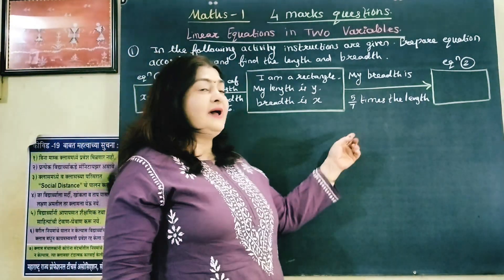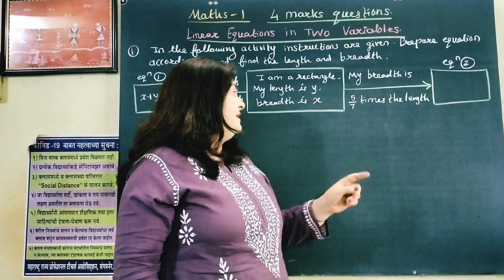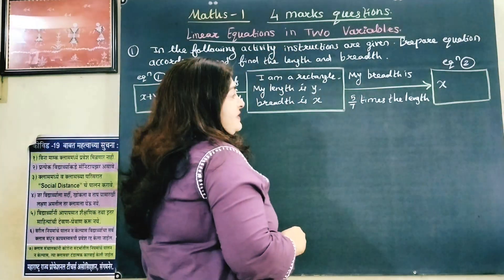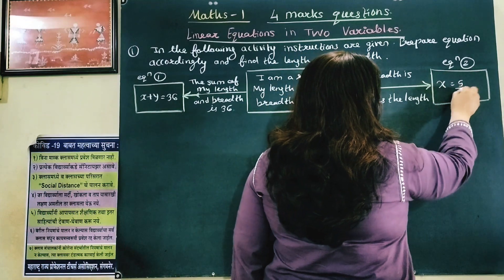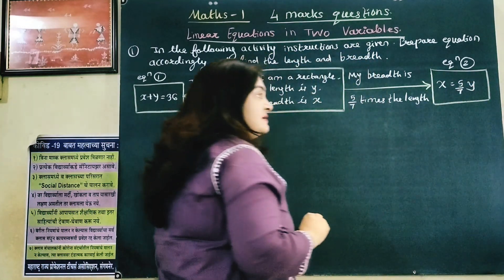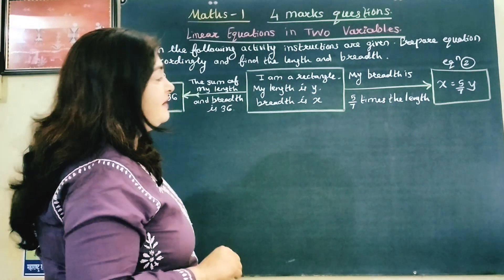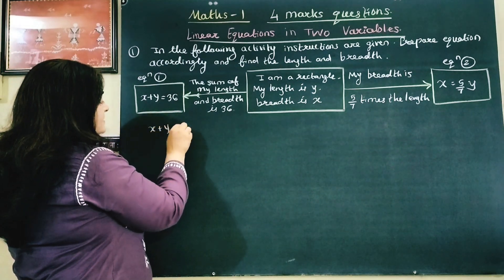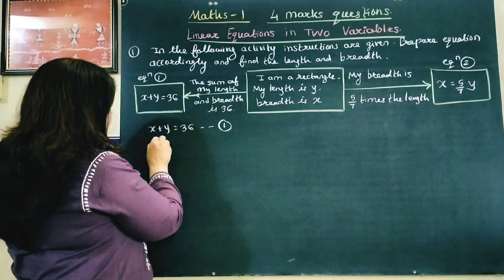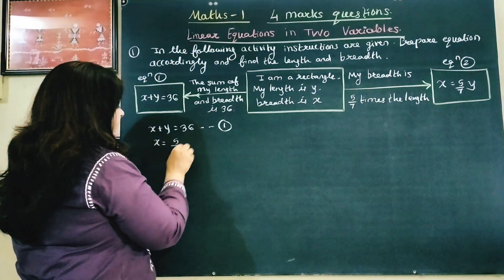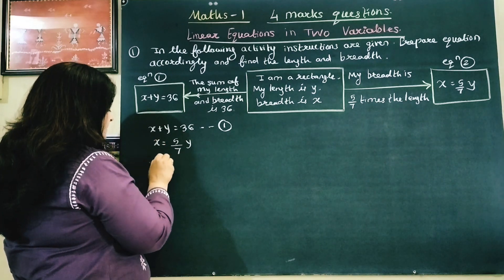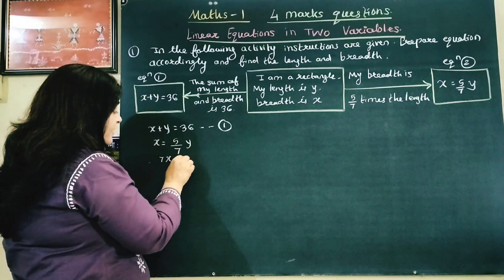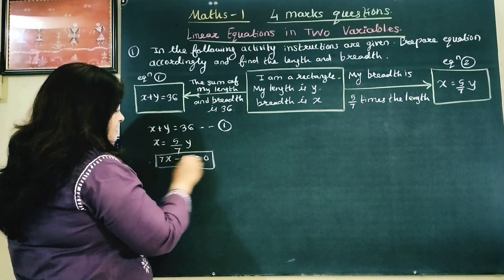The second arrow says my breadth X is 5 upon 7 times the length Y. So X equals 5 upon 7 times Y. Multiplying both sides by 7, we get 7X equals 5Y, which gives us 7X minus 5Y equals 0. This is equation 2.